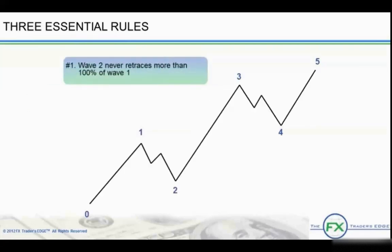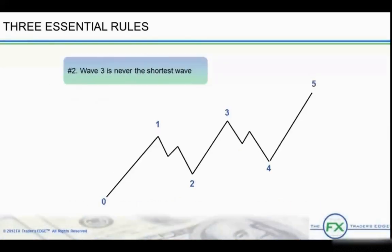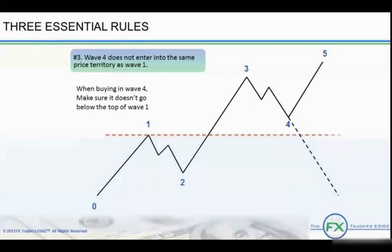Rule number 1: Wave 2 never retraces more than 100% of Wave 1. Wave 2 never goes below point zero, the starting point. In other words, if Wave 2 goes below point zero, then it is not Wave 2. Rule number 2: Wave 3 is never the shortest wave. When Wave 3 is the shortest wave, another count may be in order. Rule number 3: Wave 4 does not enter into the same price territory as Wave 1. This is also known as overlap. When buying in Wave 4, make sure it doesn't go below the top of Wave 1.